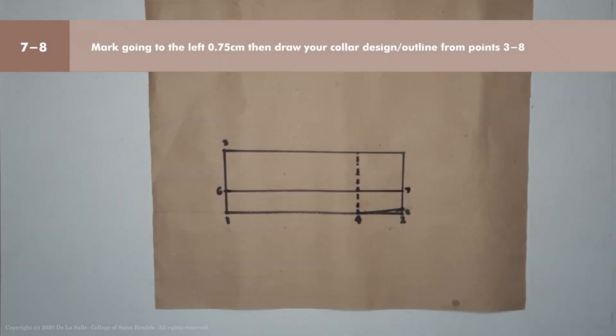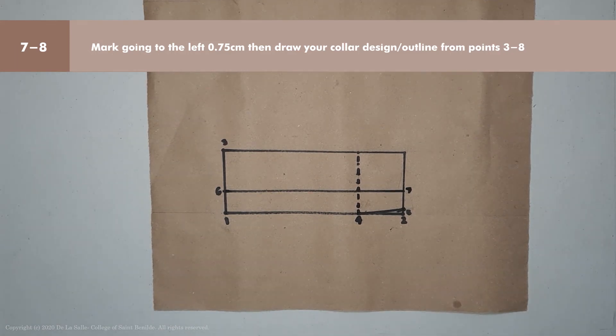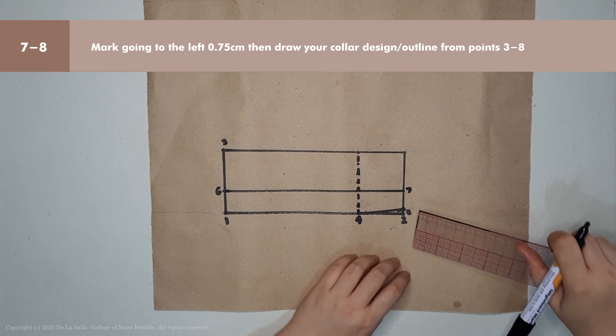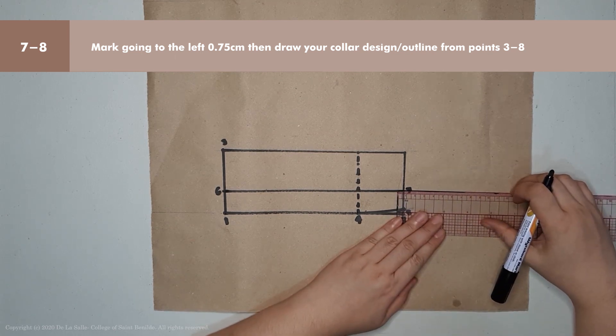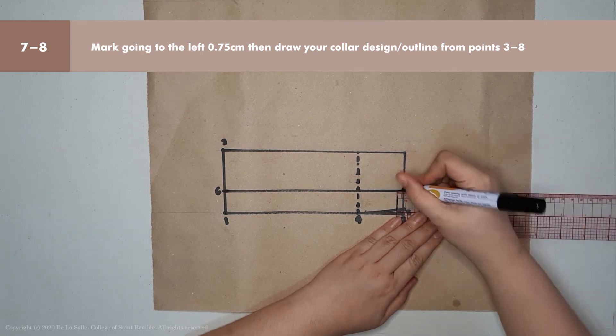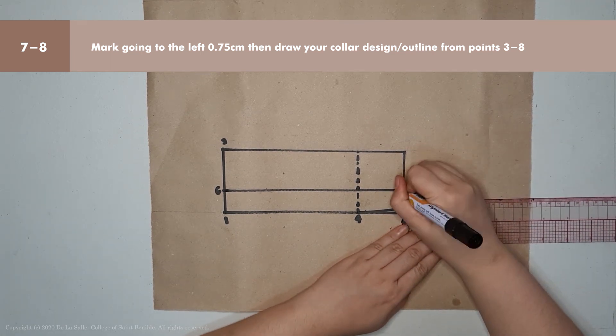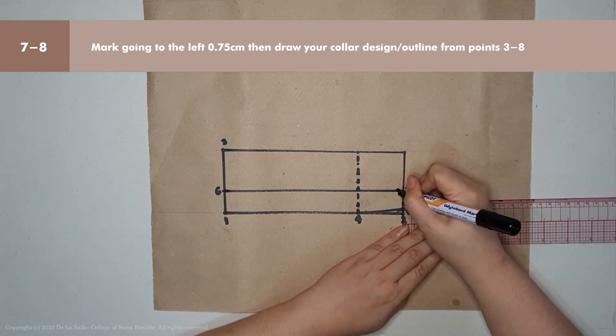Next is points 0.7 to 8. Mark 0.75 cm going in. That's point 0.8.